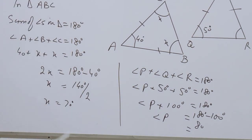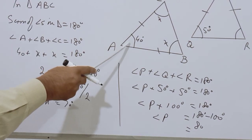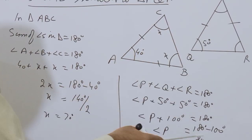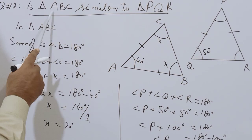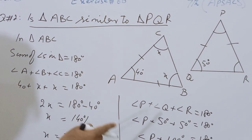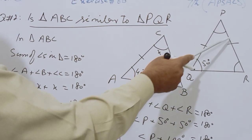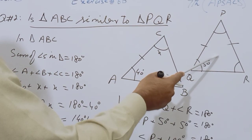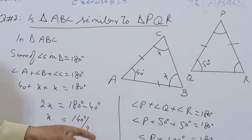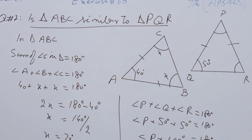Now students, Angle A is 40 degrees and Angle P is 80 degrees, so Angle A and Angle P are not congruent, so these two triangles are not similar. But I will explain it in detail.